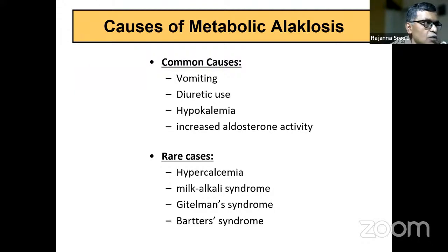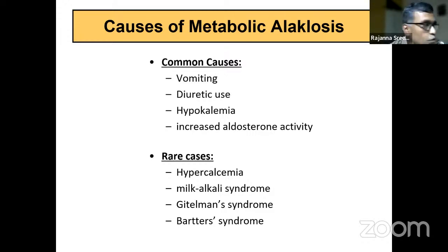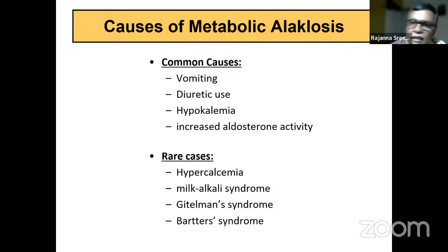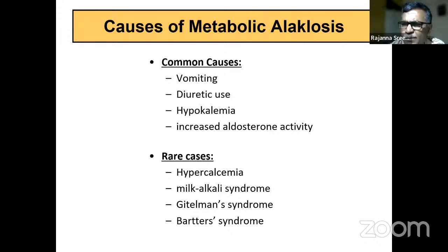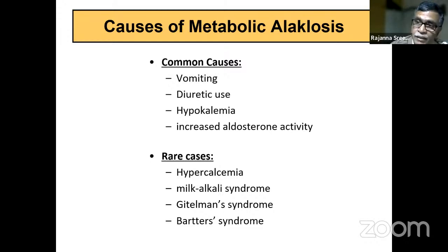Common causes of metabolic alkalosis include vomiting, excess diuretic use, hypokalemia, and increased aldosterone activity. Rare causes include hypercalcemia, milk-alkali syndrome, Gitelman syndrome, and Bartter syndrome. The key point: whenever there is volume depletion, vomiting, diuretic use, or hypokalemia, you can expect metabolic alkalosis.